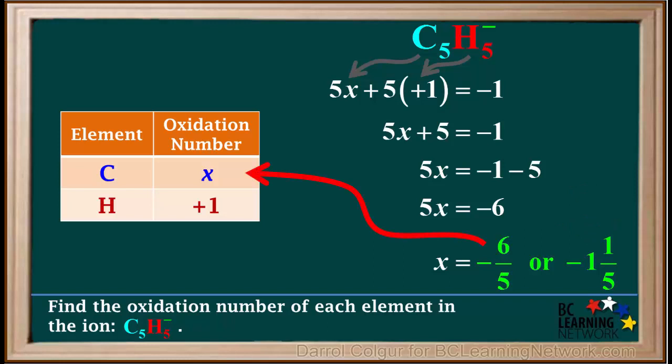So we can say that the oxidation number of carbon in this ion is negative six-fifths, or negative one and one-fifth. Even though non-integer oxidation numbers are not as common as integer ones, we see that they are possible. So don't be alarmed if you occasionally get a fraction for an answer.